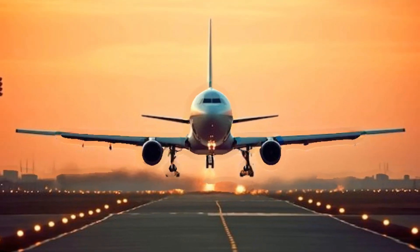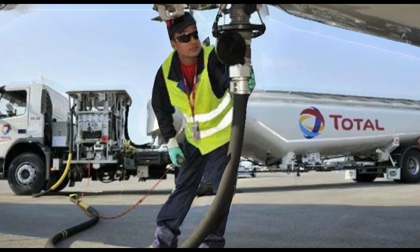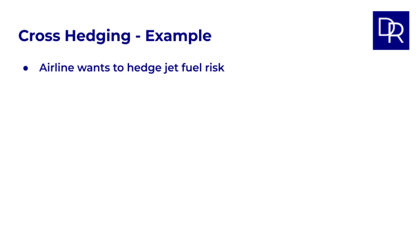Cross hedging. Think about airlines. One of their biggest costs is jet fuel. Fluctuating jet fuel prices can seriously impact their profitability. Ideally, they'd love to hedge this risk using jet fuel futures. But here's the catch. Actively traded jet fuel futures contracts are not always available, or might not be very liquid. So what do they do?